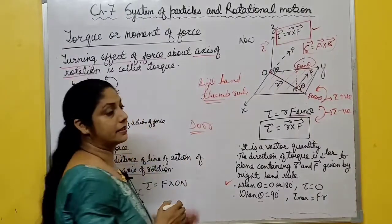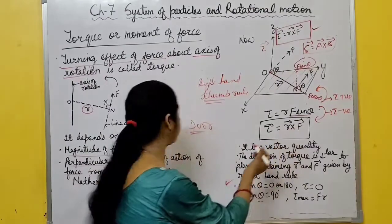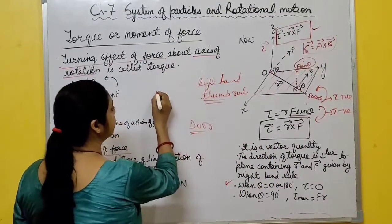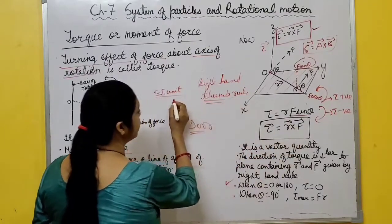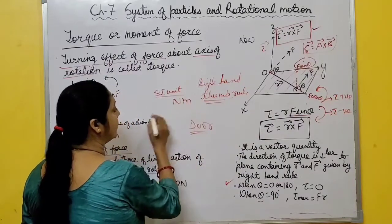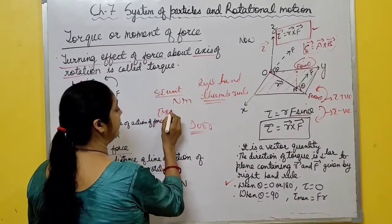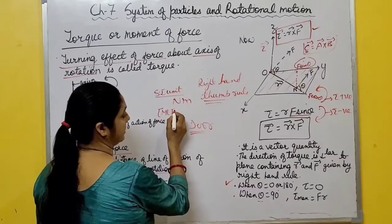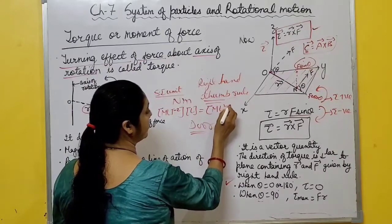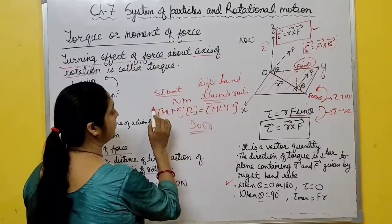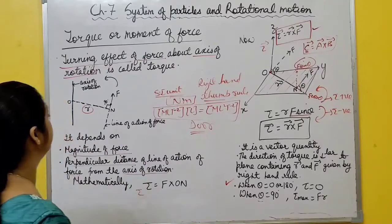What is the formula for torque? τ = R × F = RF sinθ. SI unit is Newton-meter. Dimensional formula: force is MLT⁻² and distance is L, so dimensional formula becomes ML²T⁻². Now next topic is angular momentum.